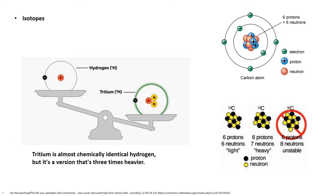Most isotopes are stable, but some can spontaneously break apart emitting energy and particles — and this is radiation. Here is another example: carbon-12 contains six protons and six neutrons and is neutral; carbon-13 contains six protons and seven neutrons and is heavy; carbon-14 contains six protons and eight neutrons and is unstable.